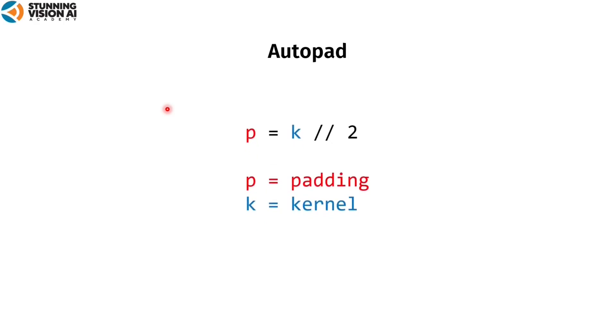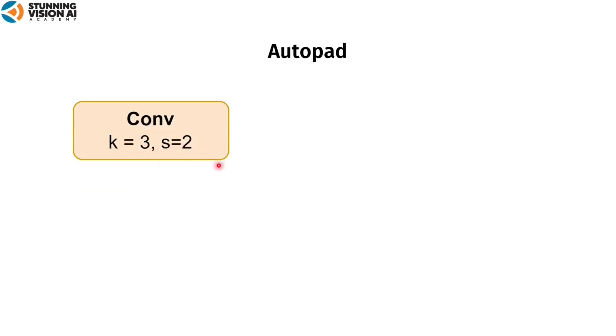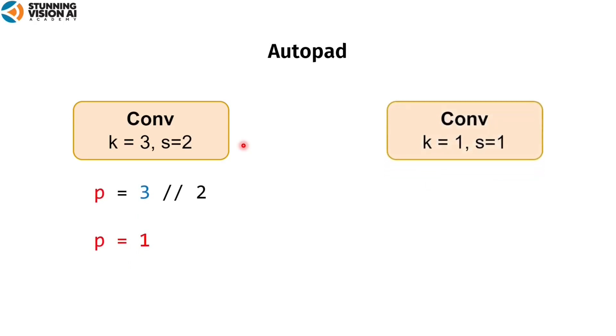In YOLO V10, there is an auto-pad code. This code is used to determine the padding value if it is not defined or none when using a convolutional block. To determine the padding value, use the following formula: the kernel value is divided by 2 using the floor division operator, so results are rounded to the nearest integer. For example, a convolution block with kernel size 3 and stride 2 has padding value 1. Another example: kernel size 1 and stride 1 gives padding value 0.